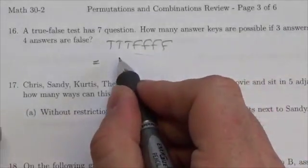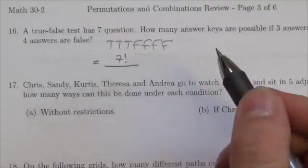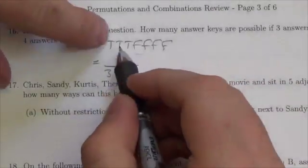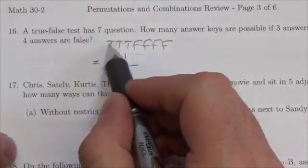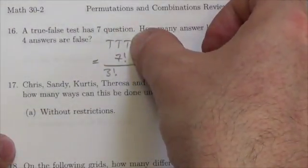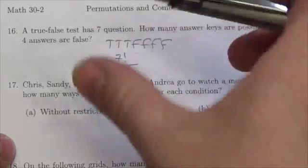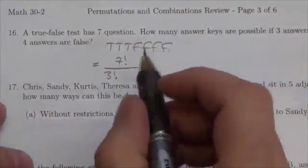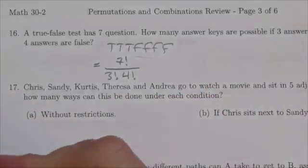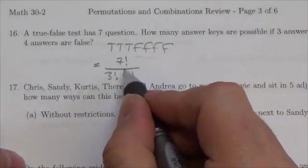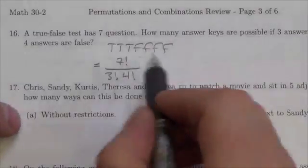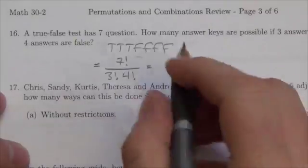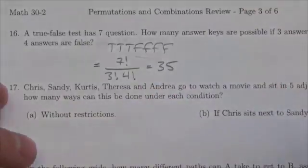We've got seven different questions here, so seven factorial. But three of them are true, so that's three factorial — if you swap the trues where they're sitting right now, you wouldn't notice a difference, so there are three factorial that aren't unique. Then divide by four factorial for the false questions, because in any position you put those, there are four factorial that aren't unique there. And when you divide that all out, you get 35 unique keys.